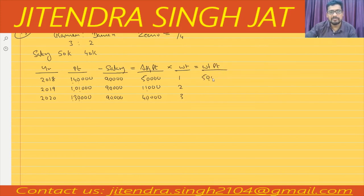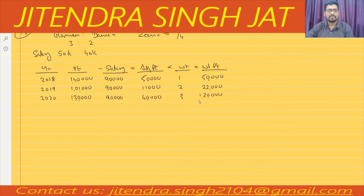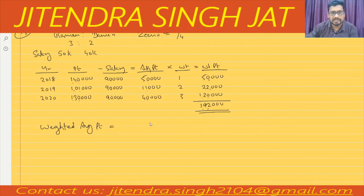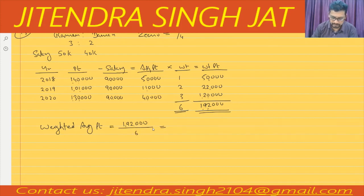Weighted profits: 50,000 × 1 = 50,000; 11,000 × 2 = 22,000; 40,000 × 3 = 1,20,000. Total weighted profit: 50,000 + 22,000 + 1,20,000 = 1,92,000. The total of weights is 6. So weighted average profit = 1,92,000 ÷ 6 = 32,000.